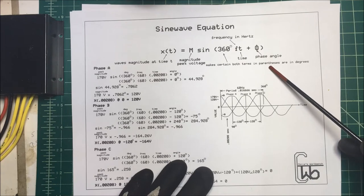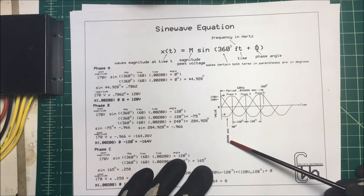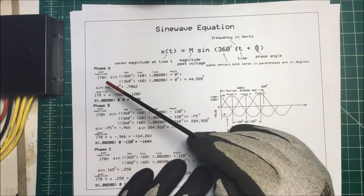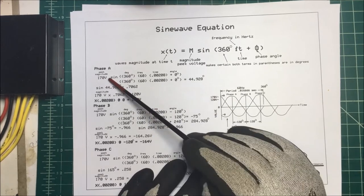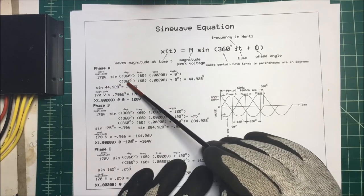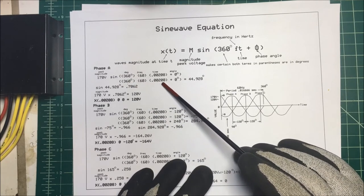Let's start with phase A here and we'll figure out what the voltage is at this particular time. We've got 170 volts, that's going to be our peak value, and so we take our 360 degrees times our 60 times 0.00208.